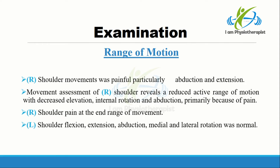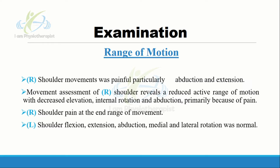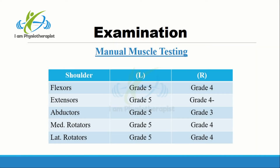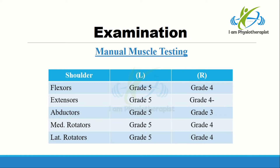Range of motion of right shoulder abduction and extension was painful. Movement assessment revealed reduced active range of motion with decreased elevation, internal rotation, and abduction, primarily because of pain. Right shoulder pain was present at the extremes of movements. Left shoulder flexion, extension, abduction, medial and lateral rotation were all normal. Manual muscle testing of the right shoulder showed shoulder flexors at grade 4, shoulder extensors at grade 4 minus, shoulder abductors at grade 3, and medial and lateral rotators at grade 4.